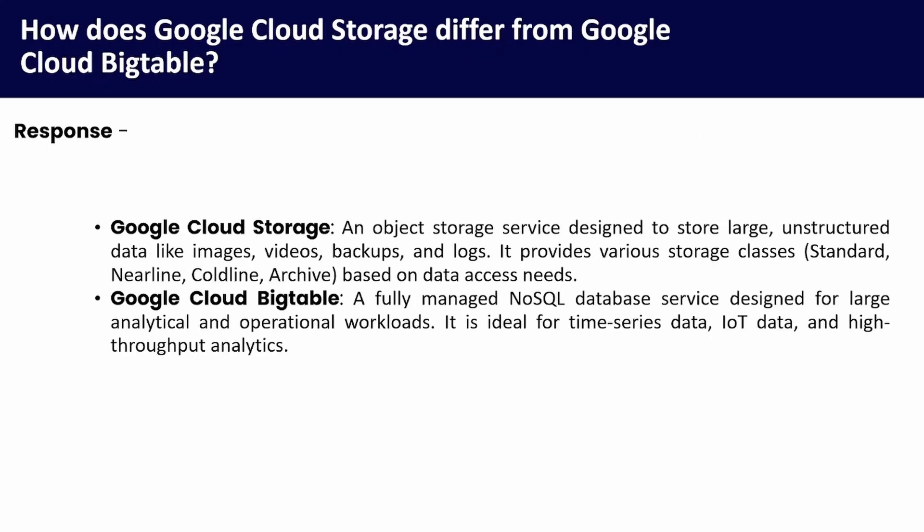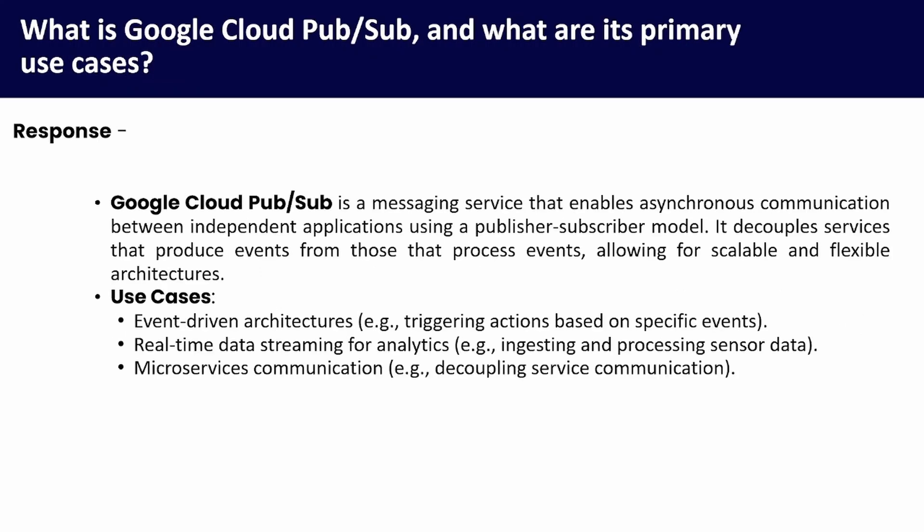How does Google Cloud Storage differ from Google Cloud Bigtable? Google Cloud Storage is an object storage service designed to store large unstructured data like images, videos, backups, and logs. It provides various storage classes — Standard, Nearline, Coldline, and Archive — based on data access needs. Google Cloud Bigtable is a fully managed NoSQL database service designed for large analytics and operational workloads; it is ideal for time series data, IoT data, and high-throughput analytics.